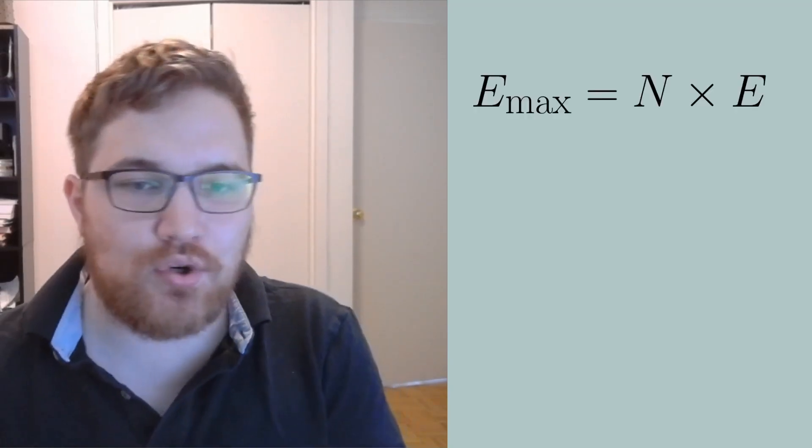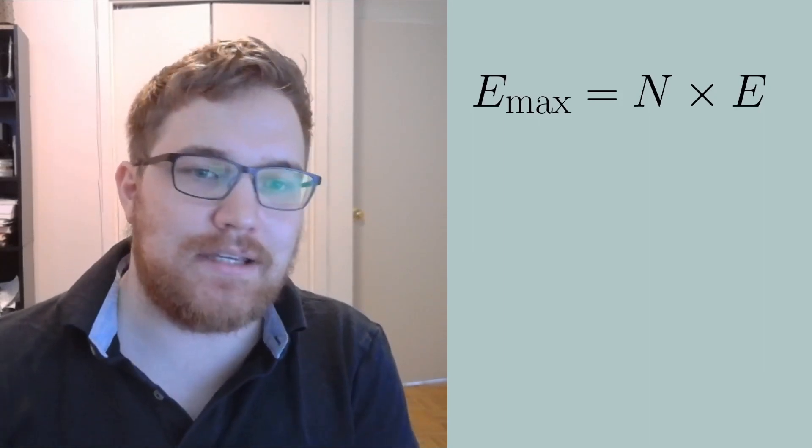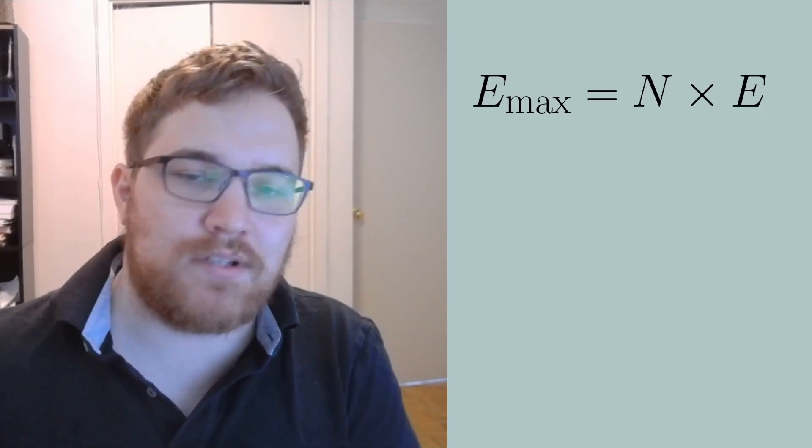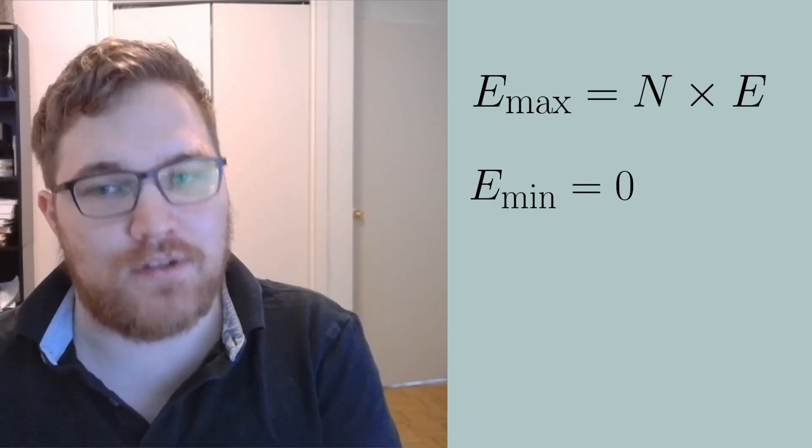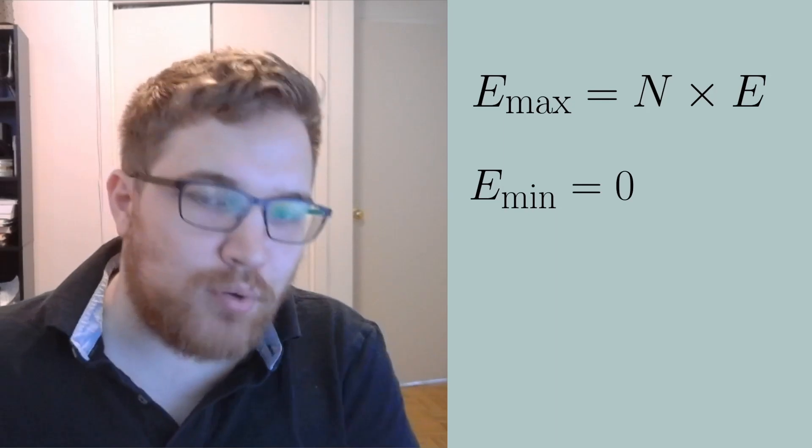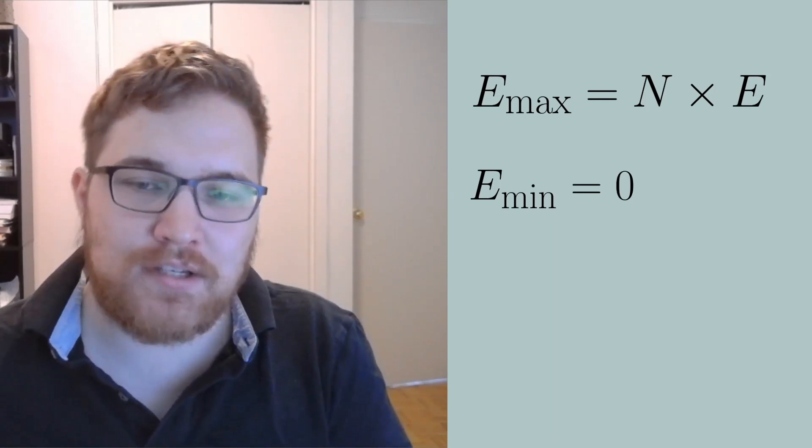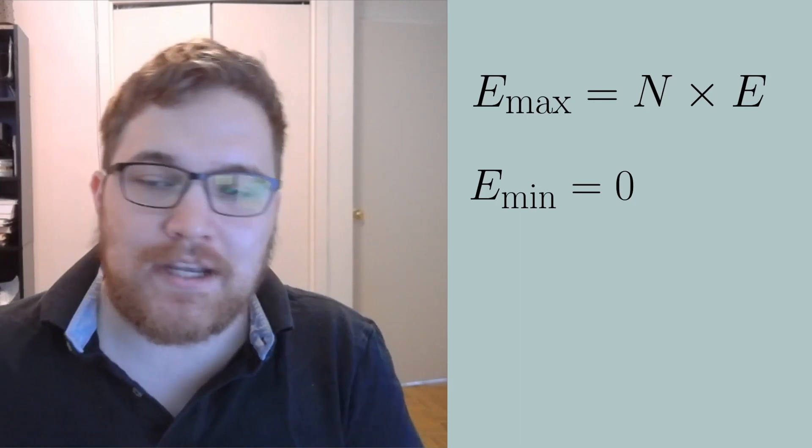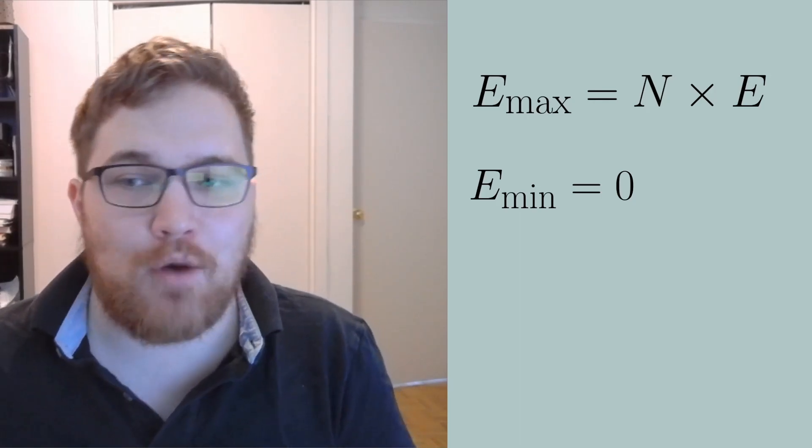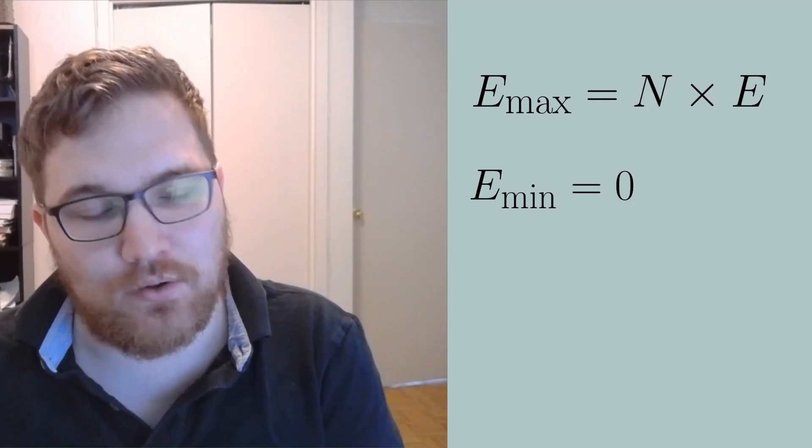This gives us an energy of n times E. The minimum energy microstate always has all spins pointing down and has an energy of zero. As we saw previously, if I instead want some of my spins to be up and some of my spins to be down, I can use counting arguments to see how many microstates I have for any given energy.